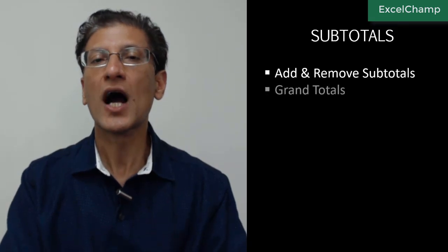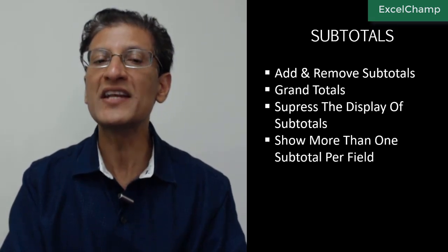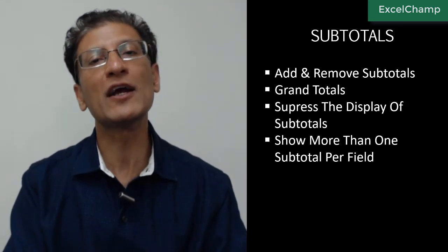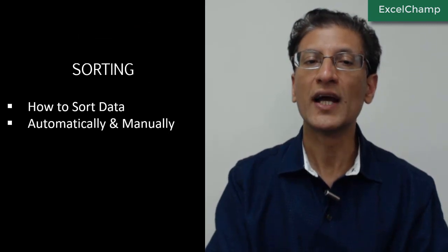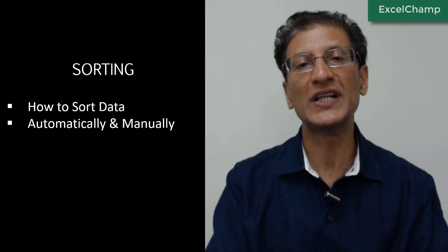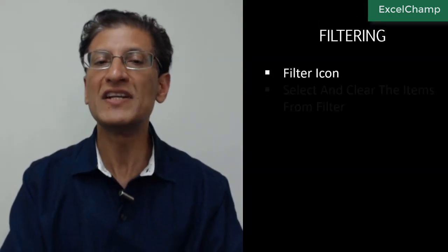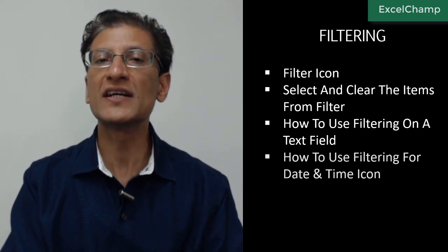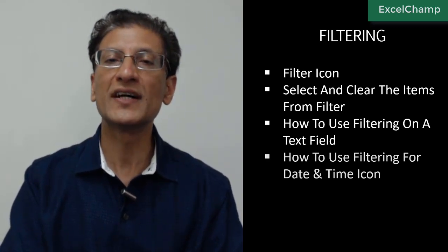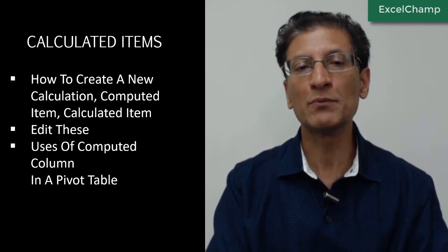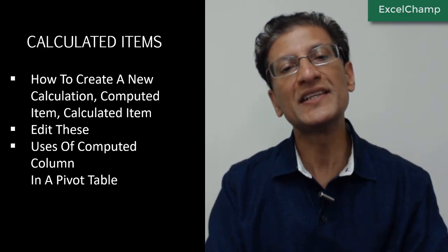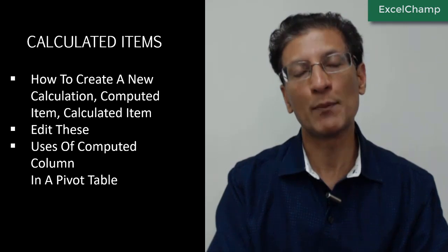In the fourth lesson, we look at how to add and remove subtotals and grand totals, how to suppress the display of subtotals, and how to display more than one subtotal per field. In the fifth lesson, we will learn all about sorting — how to sort data automatically and manually. The sixth lesson is all about filtering: how to set and clear filters, how to filter a text item, and how to filter date and time. The seventh lesson is all about creating your own calculations — how to create a calculated item, new calculations, how to edit them, and how to use computed columns inside a pivot table.